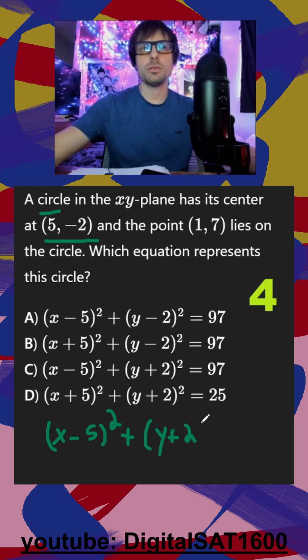So it's (y + 2) squared because it's negative 2 in the center. And finally, it equals your radius squared. You should notice squared, squared, squared.